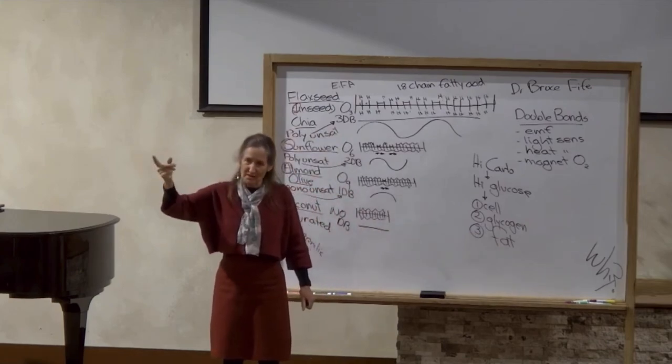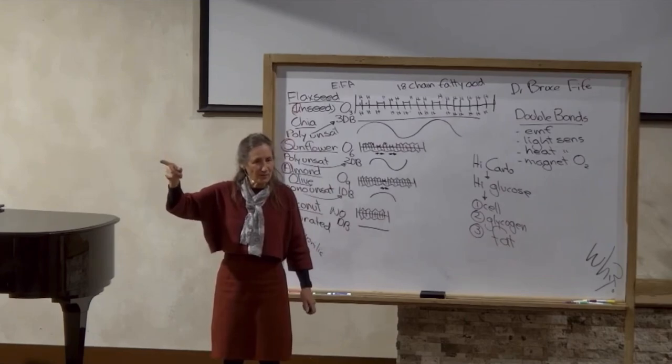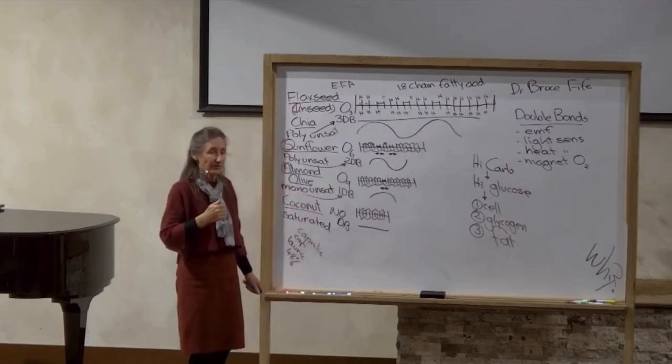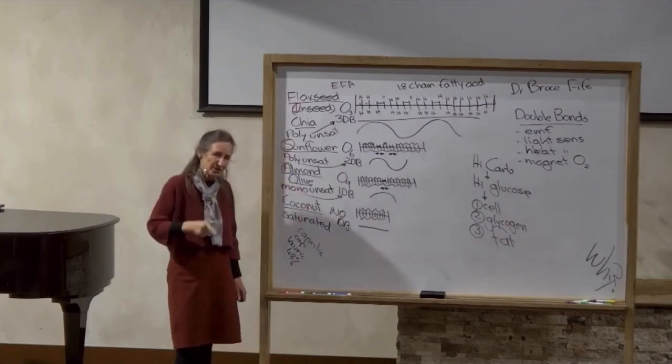But my question is, the DHA has six double bonds. How can they extract that with no exposure to light, heat, and oxygen? But the body is well able to convert ALA to DHA.